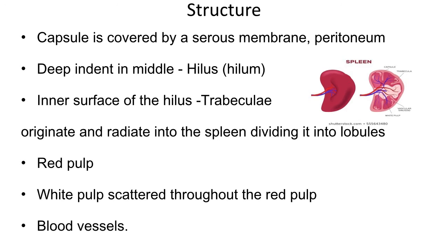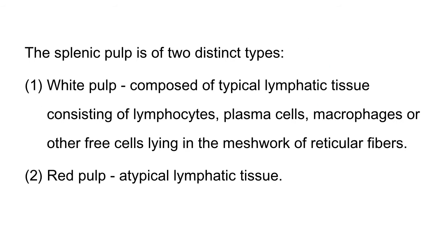There are no lymphatic vessels in the spleen. From the inner surface of the hilum, the trabeculae originate and radiate into the spleen, dividing it into small lobules. In addition to the trabeculae that divide the lobe into lobules, each lobule has the red and the white pulp scattered throughout the spleen, which are two distinct types of splenic pulp.